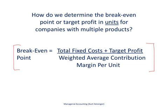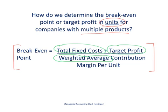To find the break-even point in units for a company that has multiple products, we would take total fixed costs, add to that the target profit — if it's a break-even point the target profit would be zero — and divide that by the weighted average contribution margin per unit. So we are going to talk about how to find that weighted average contribution margin per unit.